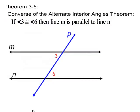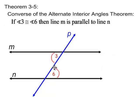Theorem 3-5: the converse of the alternate interior angles theorem. This theorem states that if this angle is congruent to that angle, then line M is parallel to line N.